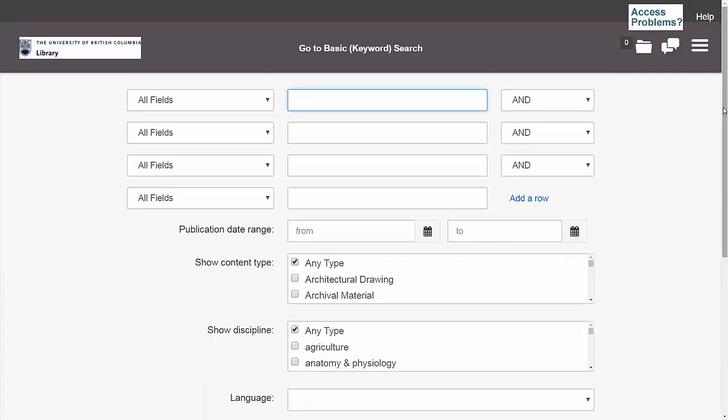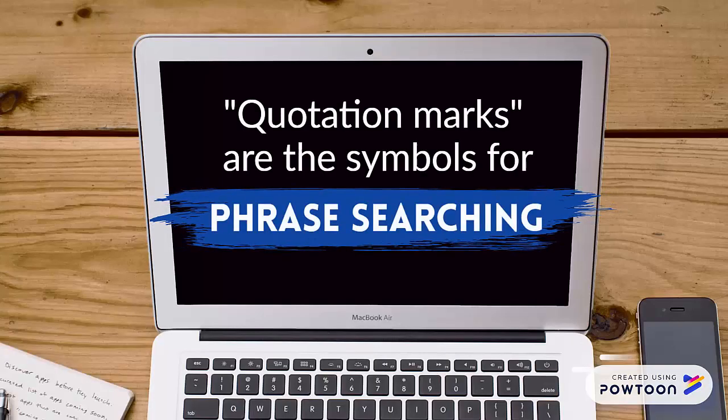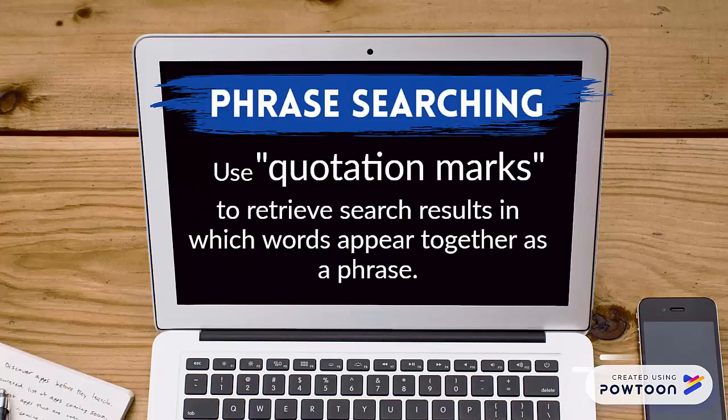Now before I start adding my keywords, let's go over some tips that you can use to create your search strategy. First, you may remember from the Introduction to Searching video that quotation marks can be a powerful tool for phrase searching in almost any database, including when you search in Summon. You should use quotation marks when searching for a multi-word phrase in order to ensure that you only get search results in which those words appear together.